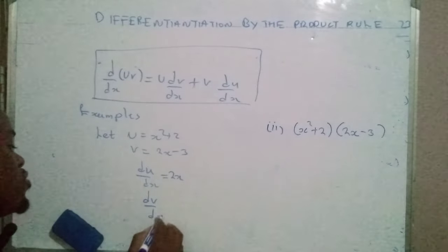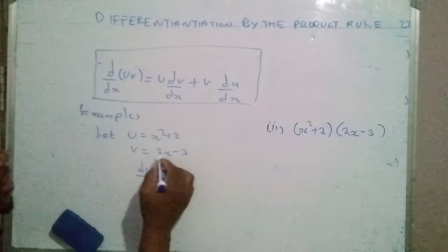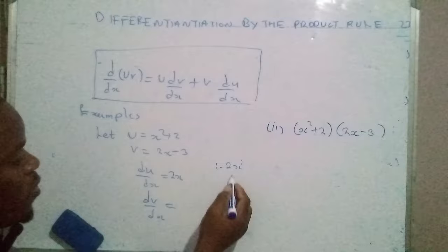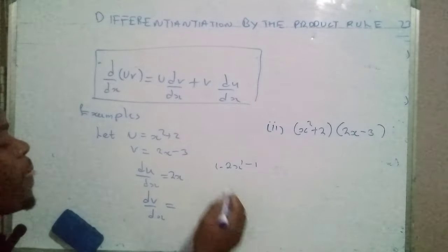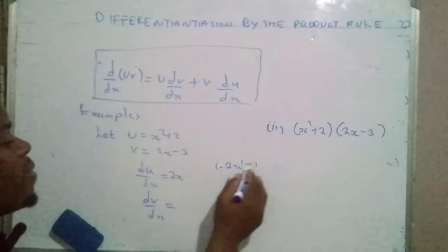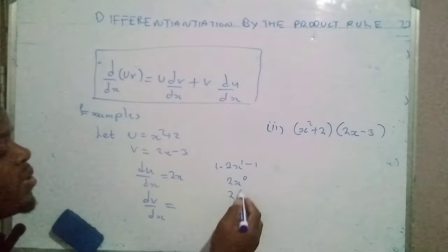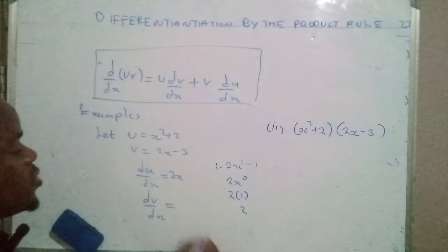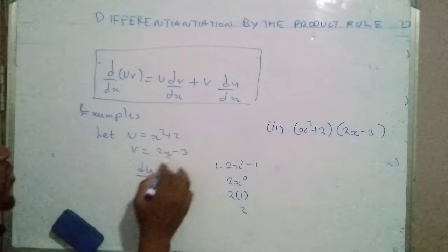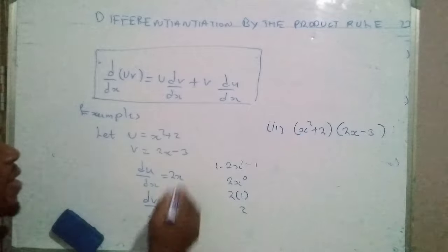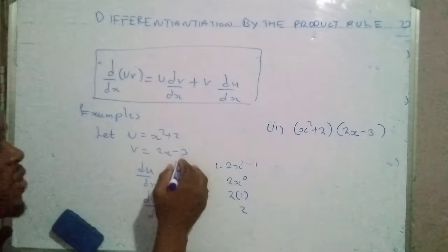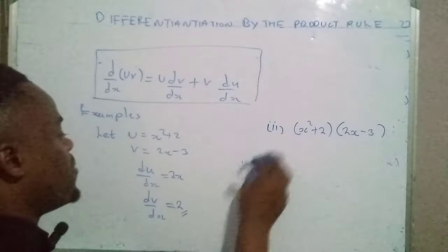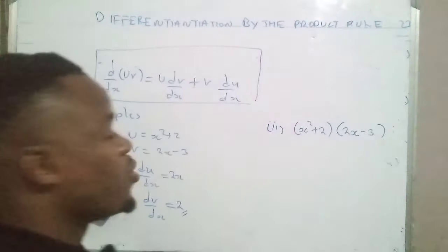Then we differentiate v with respect to x: dv/dx — we have 2x, there is a coefficient of one on the x that hasn't been indicated, so the one will drop and multiply by the coefficient two, then subtract the one: one times two gives 2x to the power zero, and anything raised to the power zero is one, so two times one equals two. The derivative of 2x is two, and differentiating the constant gives zero, so dv/dx equals two.